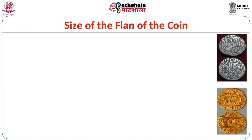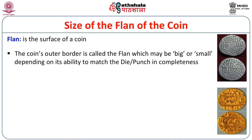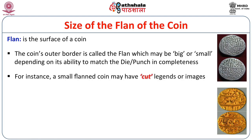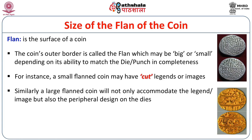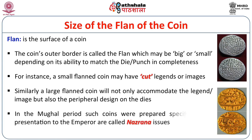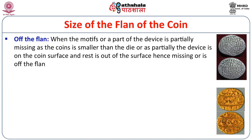Coins also serve as tools for propagating political, religious, and cultural ideas for a ruling dynasty. Now, the term 'planchet' refers to the surface of a coin. The coin's outer border is called the planchet, which may be big or small depending on its ability to match the die punch completely. A small planchet coin may have cut legends or images, while a large planchet coin accommodates the full legend, image, and peripheral design. In the Mughal period, coins prepared for presentation to the emperor are called Nazrana issues. 'Off the planchet' refers to when part of the device is partially missing because the coin is smaller than the die.